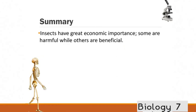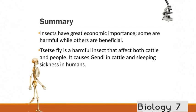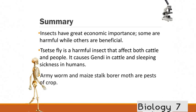So in summary insects they've got a really great economic importance. So they're not all bad. Some of them are really really important. But some are harmful. And we've got an ongoing battle to find a balance of the good and bad ones. The tsetse fly is a really harmful one that can affect both cattle and people. And it causes that sleeping sickness. There's also the army worm and maize stalk borer which are pests of crops.